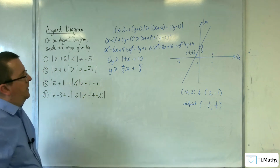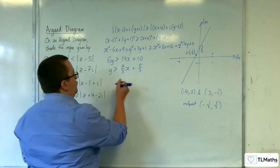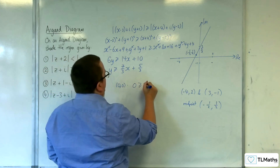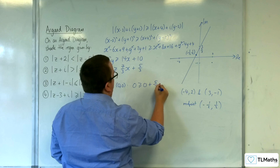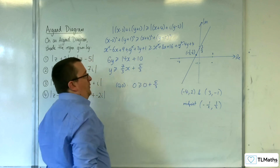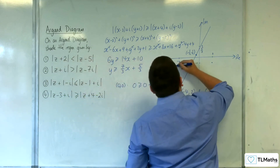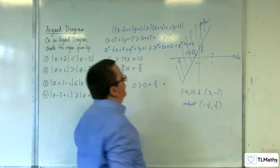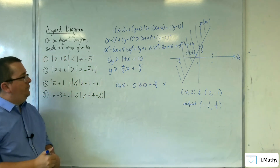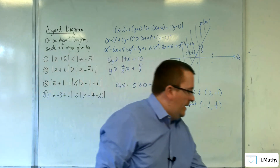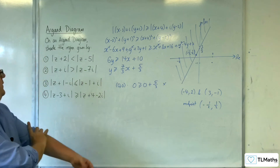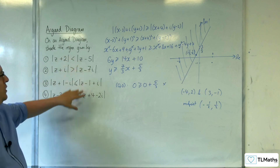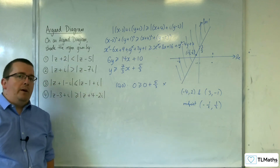Let's choose a point to see which region to select. Let's select (0, 0) — that's not on the line. So is 0 greater than or equal to 0 plus 5 thirds? Is 0 greater than or equal to 5 thirds? No. So it's the top region that I'm interested in. And that is how we can shade regions and use inequalities with these perpendicular bisectors.